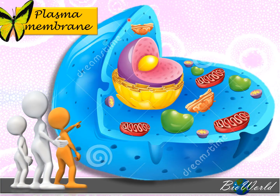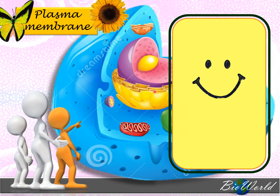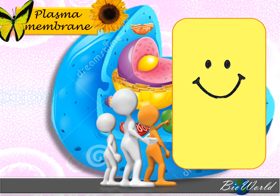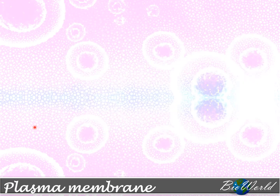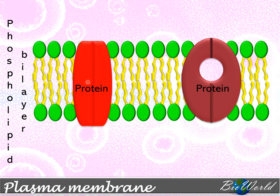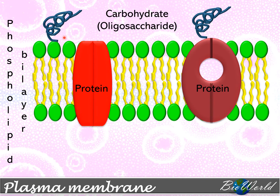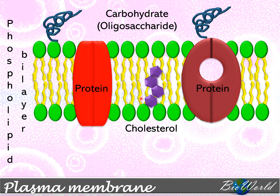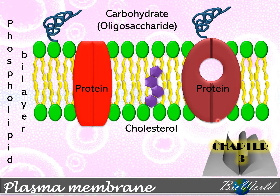The plasma membrane is the first layer in an animal cell, and it is also found in a plant cell, where it is the second layer. The plasma membrane is mainly made up of a phospholipid bilayer. Embedded in between the phospholipid bilayer are a few different types of proteins. We can also find carbohydrates in the form of oligosaccharides attached to the phospholipid head or to the proteins. Between the phospholipid tails, we can find cholesterol. The plasma membrane is made up of four different types of chemicals, which we will study in detail in chapter 3.